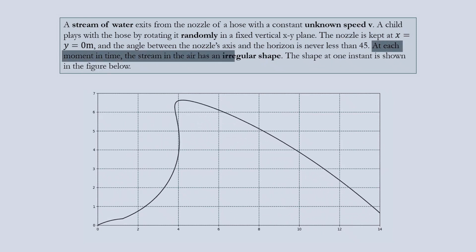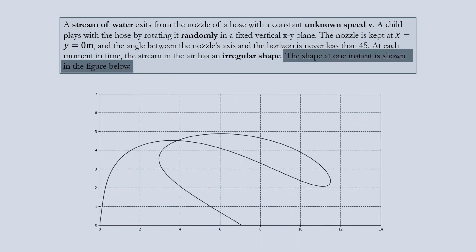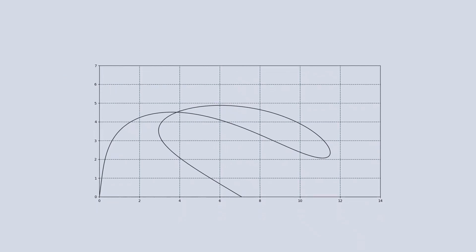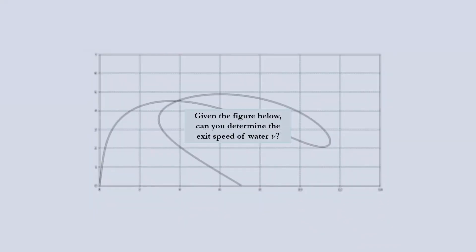At each moment in time, the stream in the air has an irregular shape. The shape at one instant is shown in the figure below. Question is, using the figure below, can you determine the exit speed of water v?